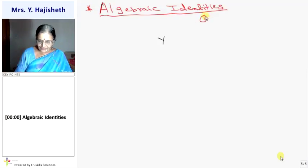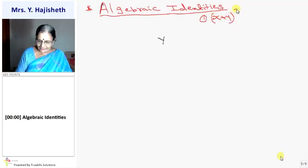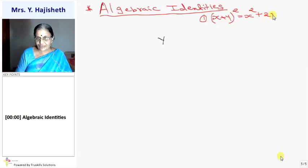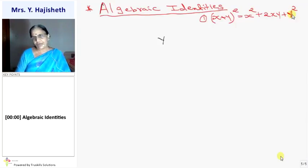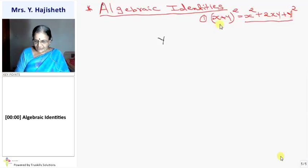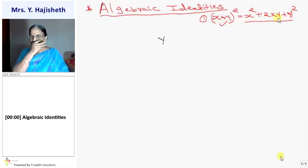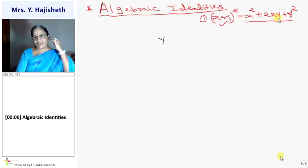First identity: x plus y whole square equals x squared plus 2xy plus y squared. Remember: 1st term square, plus 2 times 1st term into 2nd term, plus 2nd term square. You should know both directions — if the expanded form is given, you can factorize; if the simplified form is given, you can expand by multiplying x plus y with x plus y.